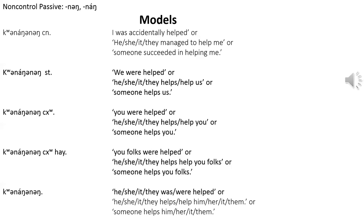For non-control passive, we're going to go over the models for ng and ng endings. Someone helps us, succeeds in helping us. Someone helps you. Someone helps you folks. And someone helps someone. So 'sin' is I or me, 'st' would be we or us, 'for' is you, 'hi' is you folks, and the ng ending would be he, she, it, or they. The non-control passive is formed with ng or ng at the end of the verb root.